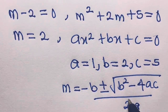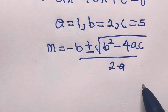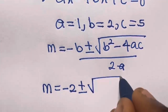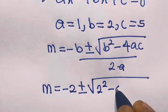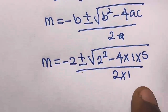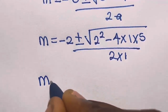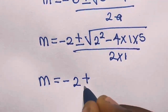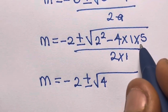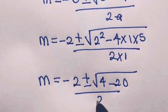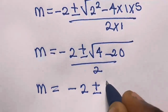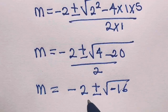Substituting the values, M equals negative 2 plus or minus square root of 2 squared minus 4 times 1 times 5, divided by 2 times 1. That gives M equals negative 2 plus or minus square root of 4 minus 20, divided by 2, which is square root of negative 16 divided by 2.